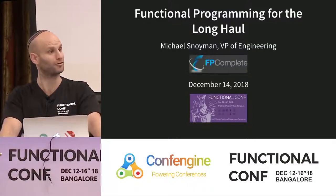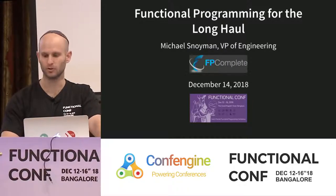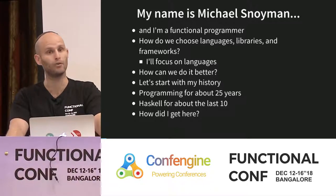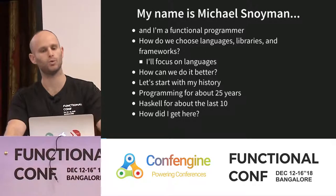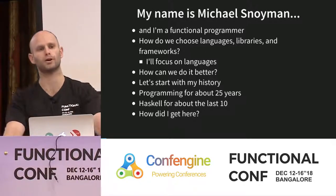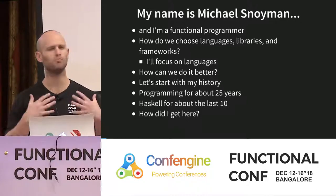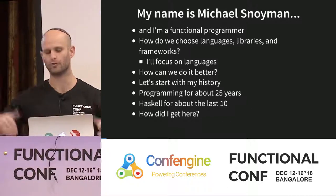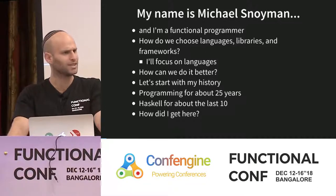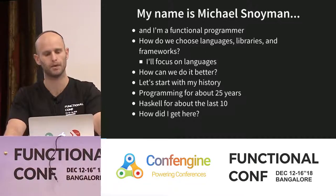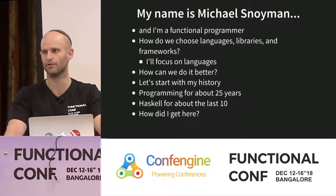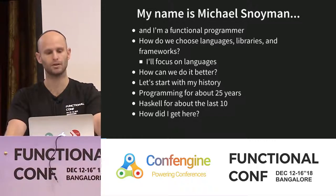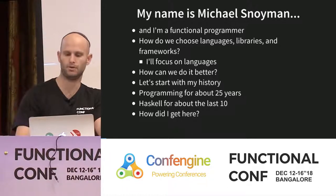Morning everyone. Welcome to this conference and this talk. My name is Michael Soyman and I am a functional programmer. Today I want to talk about how, in general, in the software industry, we choose our languages, our libraries, and our frameworks. What I'm going to say will be focused on languages just to avoid saying those three things over and over again. The main question is: how can we do it better than we do it today? I've been programming for about 25 years and I've been doing Haskell for the past 10 years.